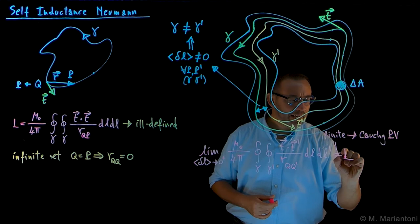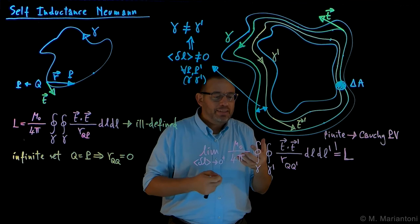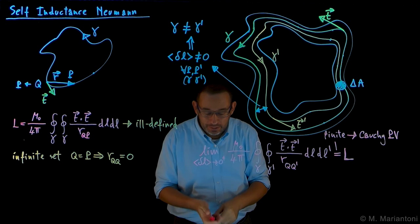So you need to make a limit. You need to intend to write these Neumann integrals with this caveat of having a little distance between these two lines, in the case of self-inductance, and go down in the limit that goes to zero. If the integral converges, then you have a self-inductance.